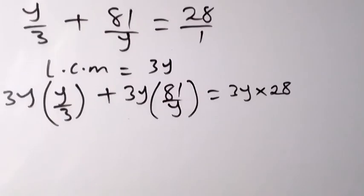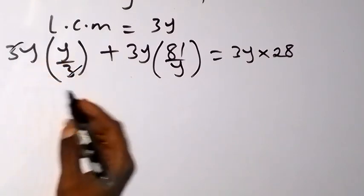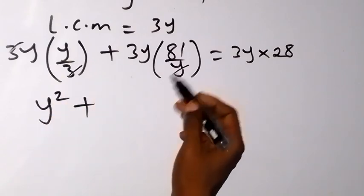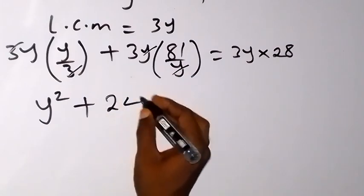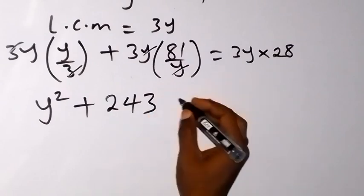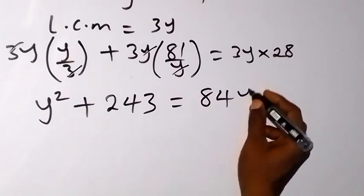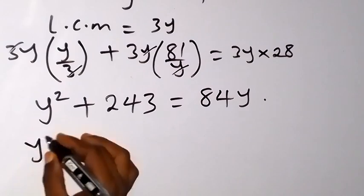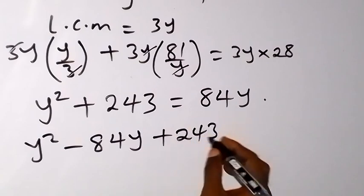When we simplify, the 3 cancels giving y times y, which is y squared. The y cancels giving 3 times 81, which is 243. On the right side, 3y times 28 gives 84y. Bringing 84y to the left forms the quadratic equation: y squared minus 84y plus 243 equals 0.